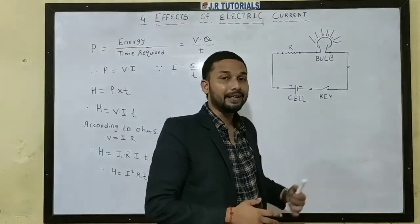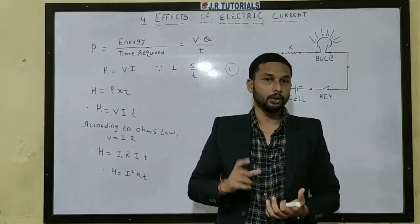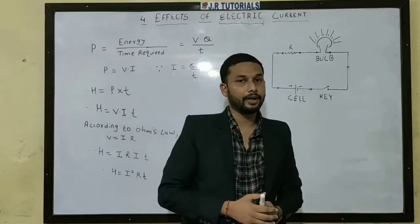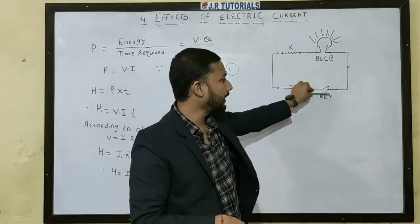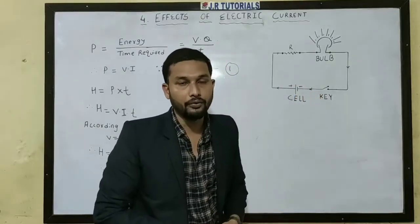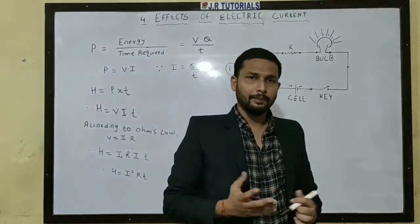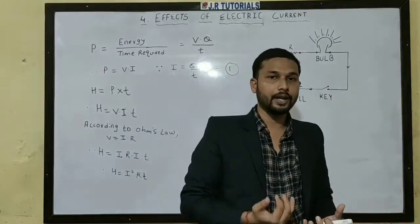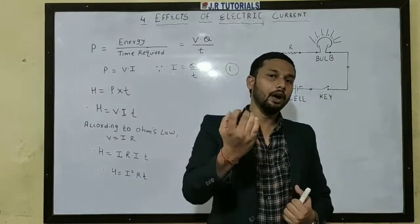The third component you can see here is the key, also known as the switch, which turns on and off. So if we have the electricity supply, we need to close the key to allow the current to flow. Next is the cell, or battery, which supplies charge. When the circuit is complete, the charge begins to flow.